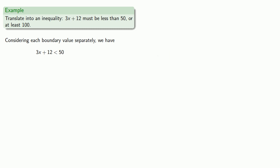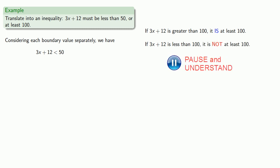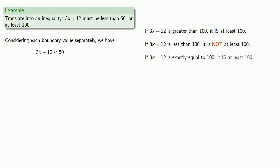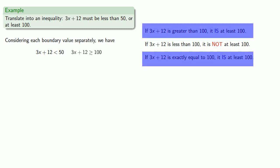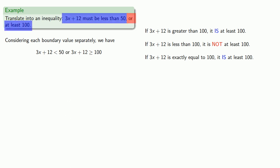The other boundary value is 100. If 3x + 12 is greater than 100, say 5 billion, then that is at least 100. If 3x + 12 is less than 100, for example 0, then 0 is not at least 100. Be sure to check those boundary values — if 3x + 12 is exactly equal to 100, then it is at least 100. So we want 3x + 12 ≥ 100. Because the problem said either this or that, we use OR to join the inequalities.